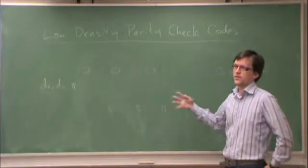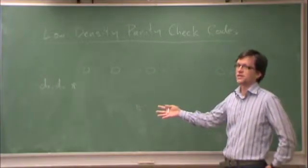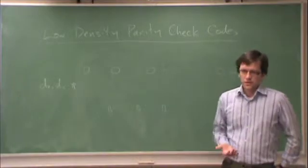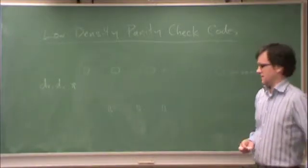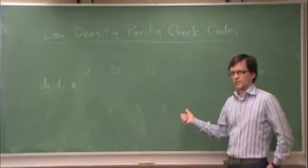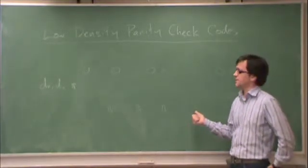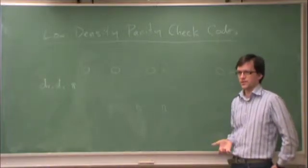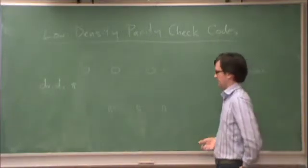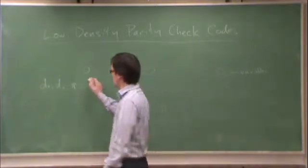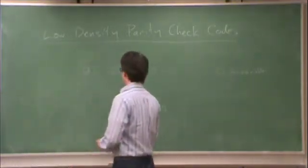Once you have this graph, then you can write down the parity check matrix, which will then define the generator matrix. You start with the graph because the graph is the easiest structure to deal with when you talk about low-density parity check codes. So the graph defines the code, not the other way.